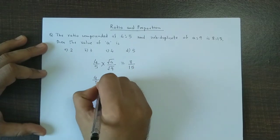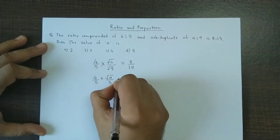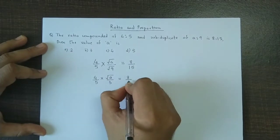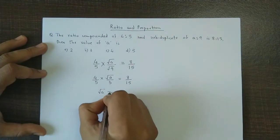So square root of a will be 8/15 × 5 × 3 ÷ 4. We can reduce this.